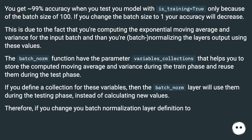You get 99% accuracy when testing with is_training=True only because of the batch size of 100. If you change the batch size to 1, accuracy will decrease. This is because the exponential moving average and variance are being computed for the input batch, and then the layer output is normalized using those values.